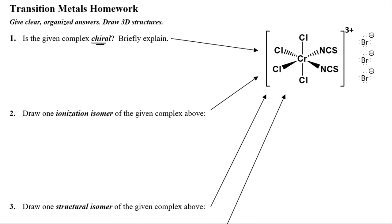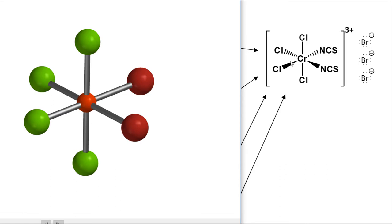Before we jump to the molecular modeling, remember there are one, two, three, four chloros and two isothiocyanatos in the cis configuration, 90 degrees apart. In the molecular modeling software, I have four green spheres for the chloros, and I'm going to represent isothiocyanato with a red sphere. The orientation is identical to the way it's drawn in the complex.